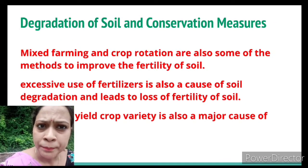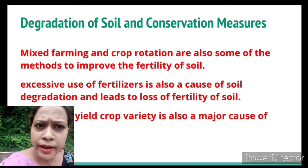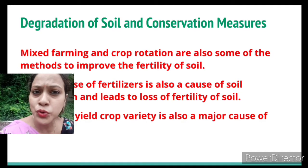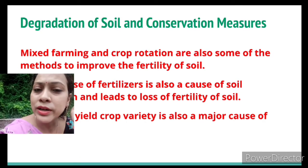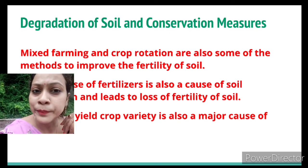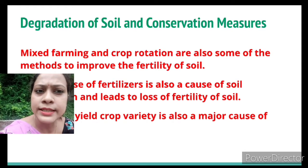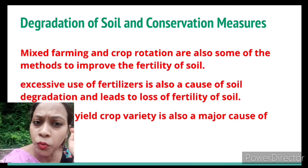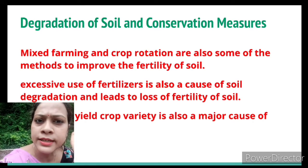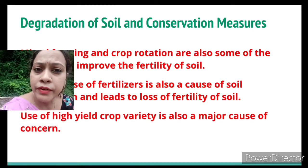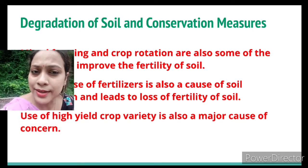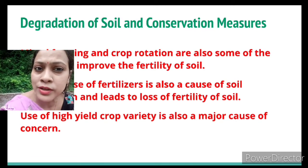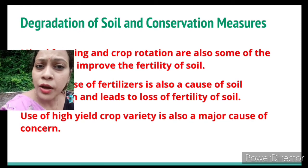Mixed farming and crop rotation are also methods to improve soil fertility and control soil erosion. Besides that, there should be control over excessive use of fertilizers and pesticides, and irrigation should also be controlled to conserve the soil. That covers soil resources — how soil is formed and how to conserve it.